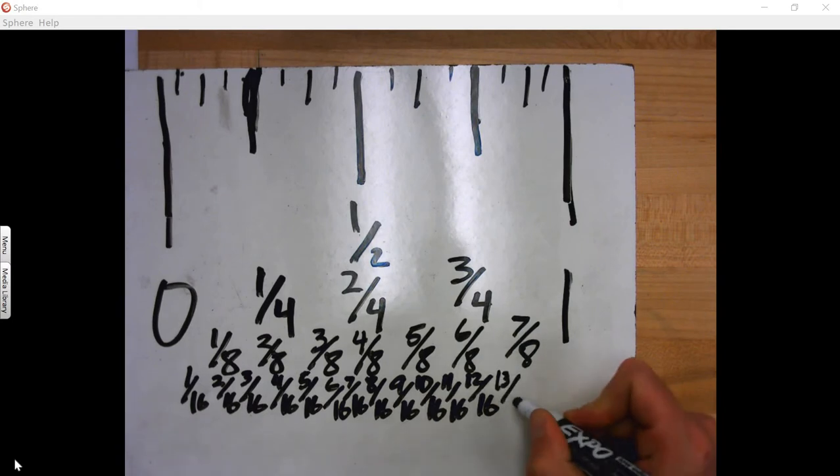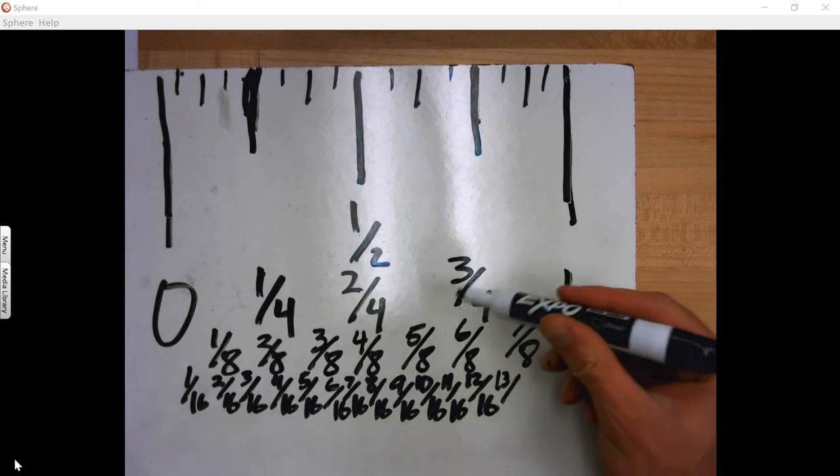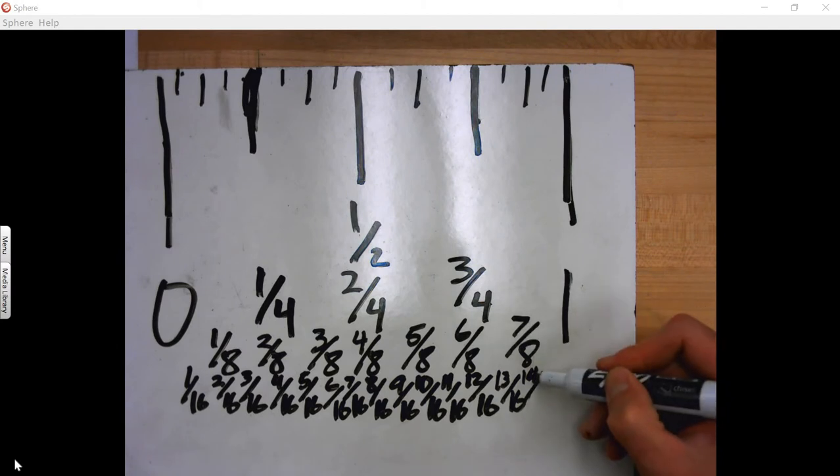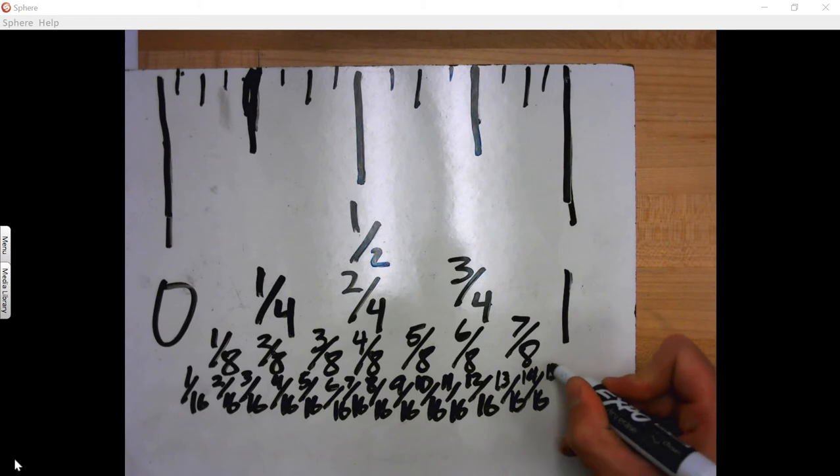And then, yeah, you're essentially doubling the numerator and the denominator in your fraction. So thirteen-sixteenths. Fourteen-sixteenths. So seven times two is fourteen, right? So fourteen-sixteenths. And then fifteen-sixteenths. And then finally, you would have sixteen-sixteenths.